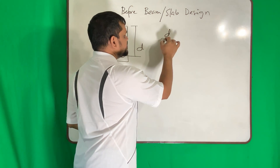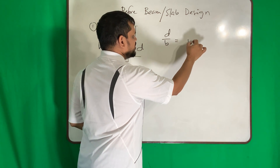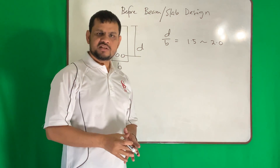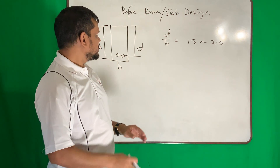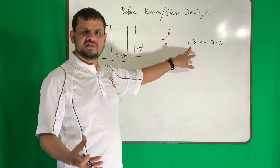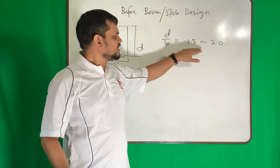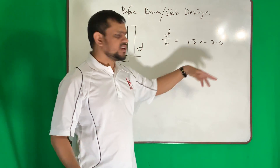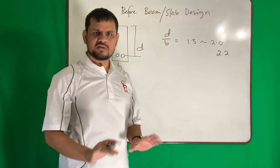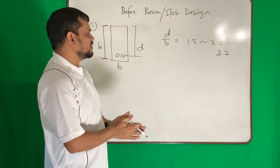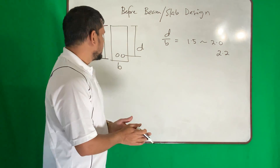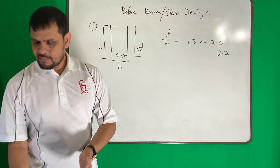The ACI code recommends D/B should be within 1.5 to 2. This ratio is very good considering everything. Can it be 1.4? No, it's okay. If the ratio is 2.2, it's also okay. But 1.5 to 2 is the recommended best design.